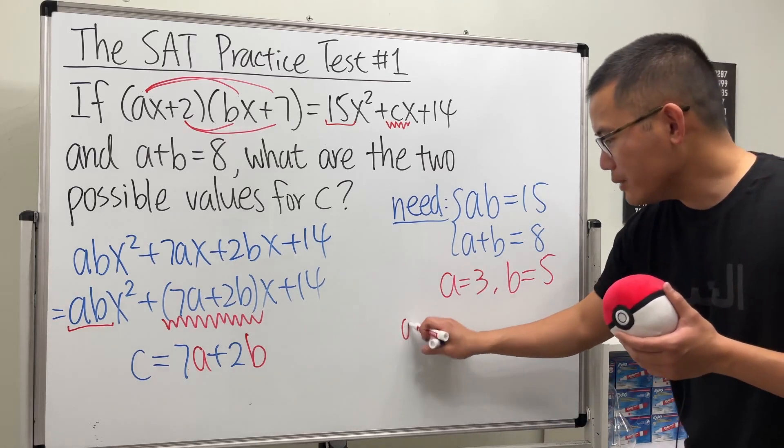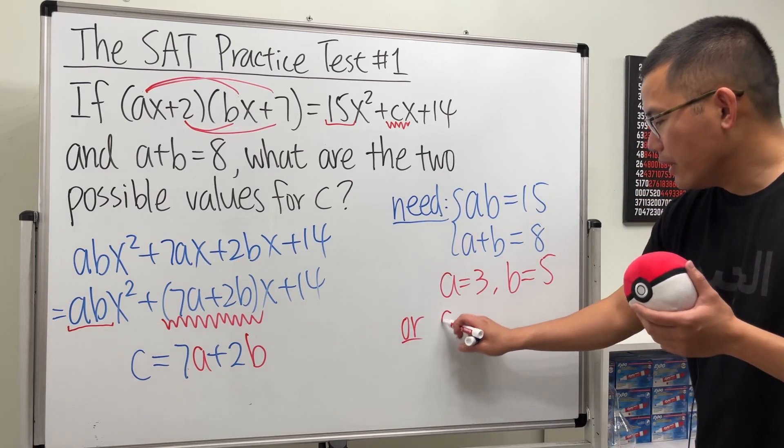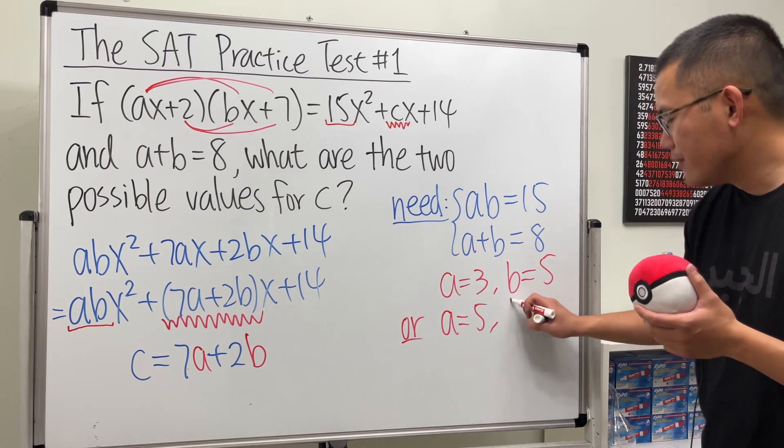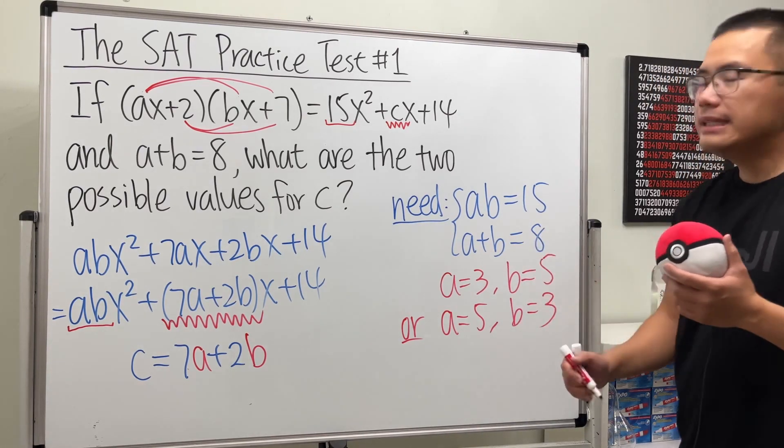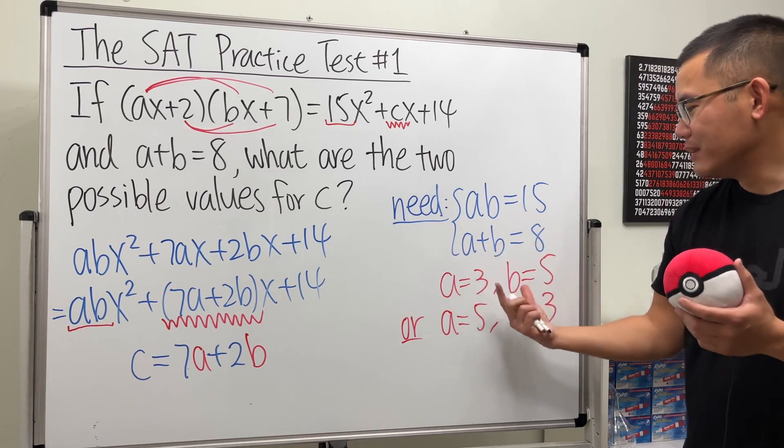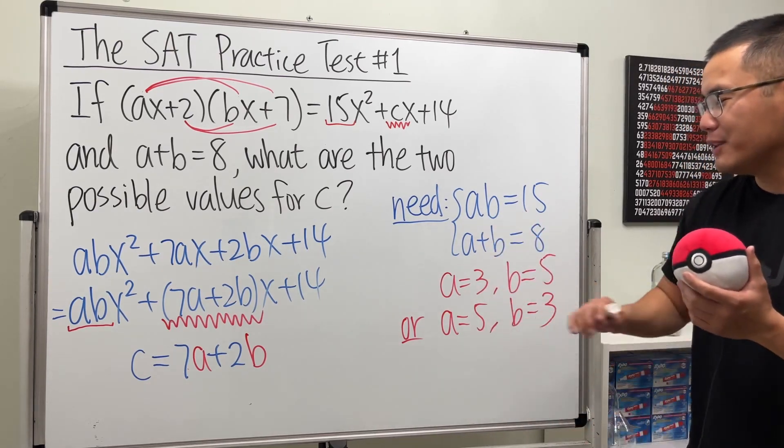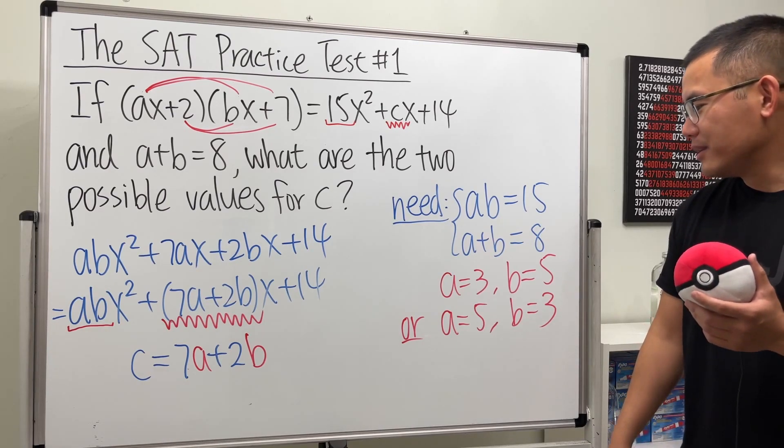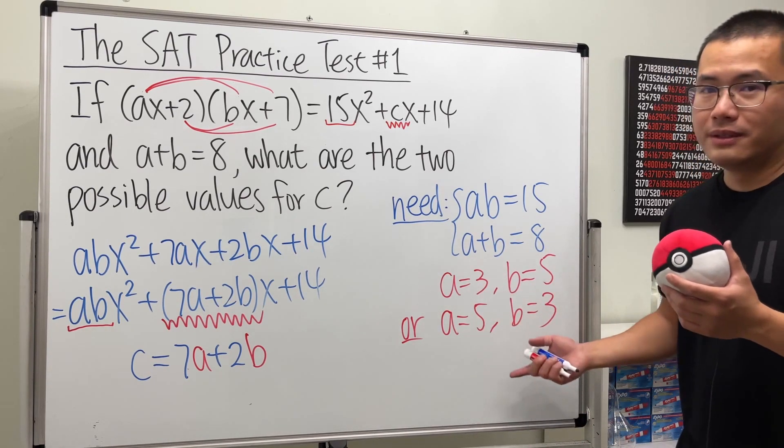But we do have another combination: a equals 5, b equals 3. And this might be a little bit tricky because the order of a and b doesn't matter. Yeah, because it's symmetrical. But I don't want to get into too many technical details about 3, 5 or 5, 3. So now we can just plug in 3 and 5 into here.